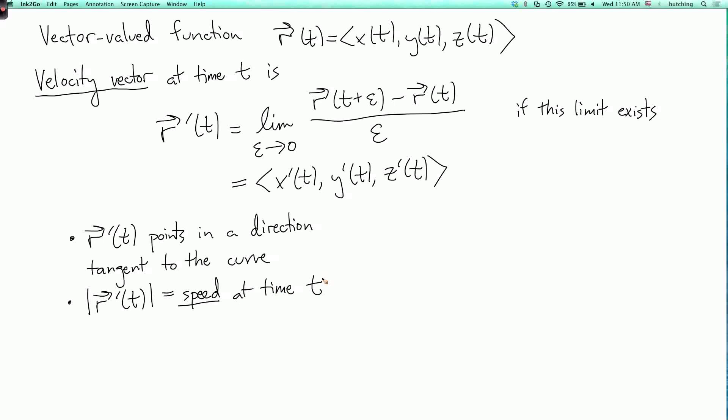So if we imagine we're flying an airplane in three-dimensional space, the length of the velocity vector is our speed, but the vector contains more information than the speed, it also contains the direction in which we're flying.